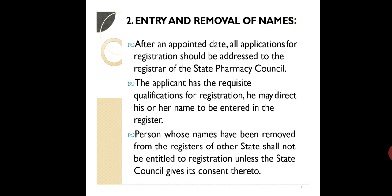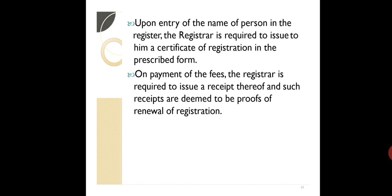If your name is not from a PCI-approved college, or something is not proper at the college level or registrar level, or some documents are incomplete, your name cannot be entered into the register. Upon entry of the name in the register, the registrar is required to issue a certificate of registration in the prescribed form. On payment of fees, the registrar issues a receipt thereof, and such receipt is deemed to be proof of renewal of registration — keep it as proof that you have applied and can get renewal of your certificate.